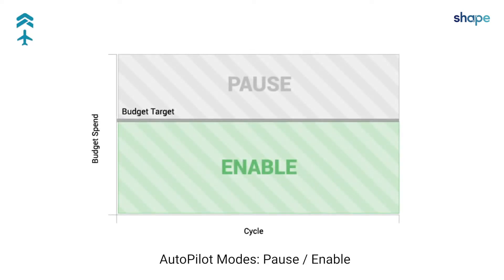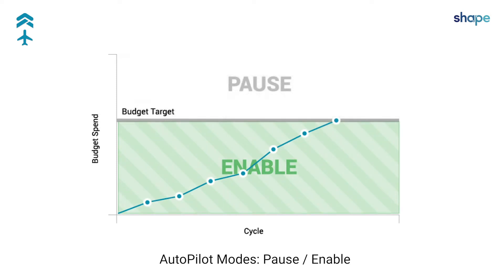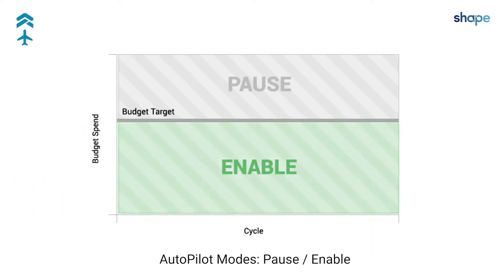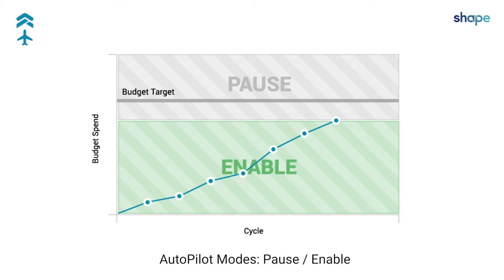The Pause Enable mode will activate your advertising campaigns whenever budget is available. This mode will pause your advertising campaigns when the sum of the spend reaches your budget target. When a new cycle is entered, this mode will automatically enable campaigns. If the budget target is changed mid-cycle, automation zones will adjust and campaign status will be changed accordingly.